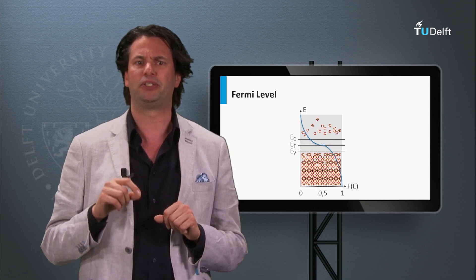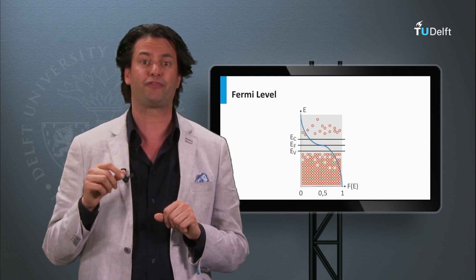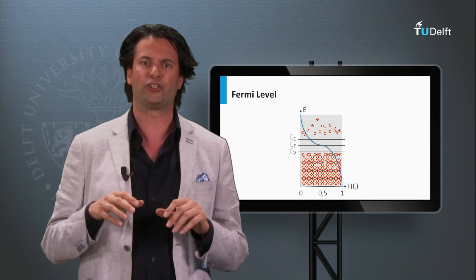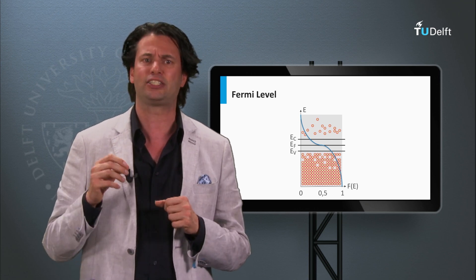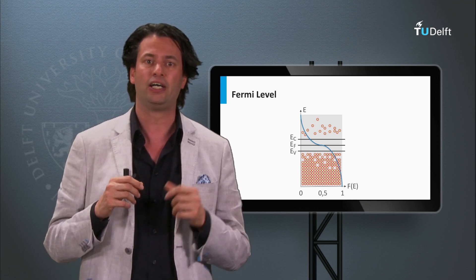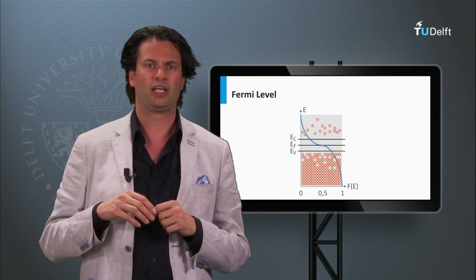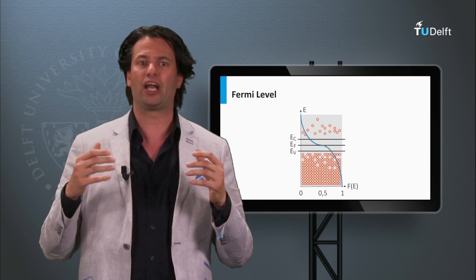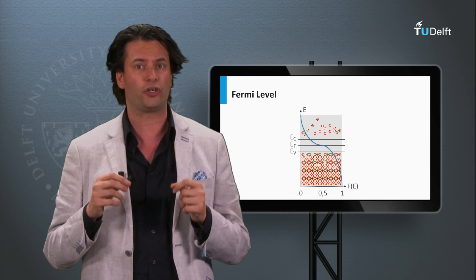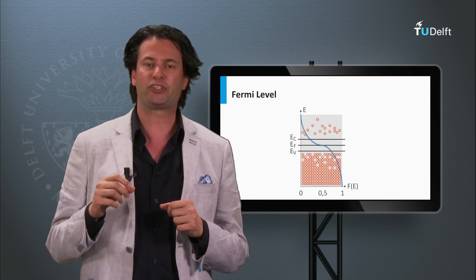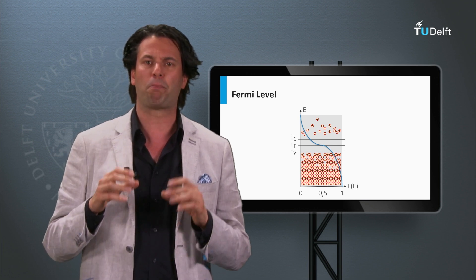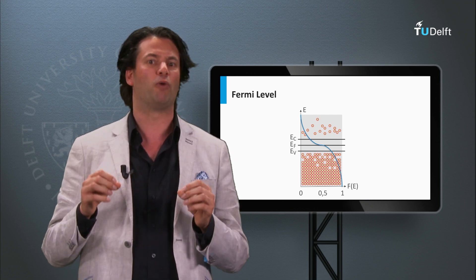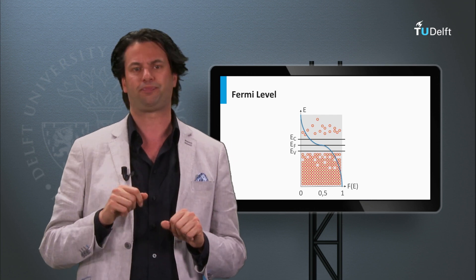If we increase the temperature, the shape of the Fermi-Dirac function broadens around the Fermi level and some electrons have the chance to occupy the conduction band as well. The higher the temperature, the more electrons can occupy the conduction band. This demonstrates the physical principle that if you heat up a semiconductor material it becomes more conductive.